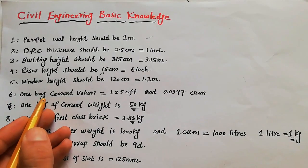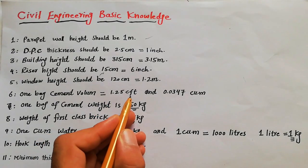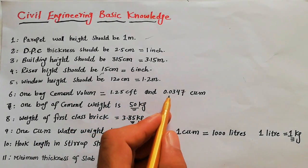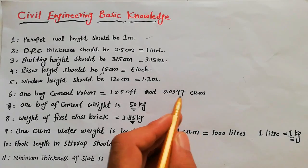Sixth: one bag cement volume is 1.25 cubic feet or 0.347 cubic meters.